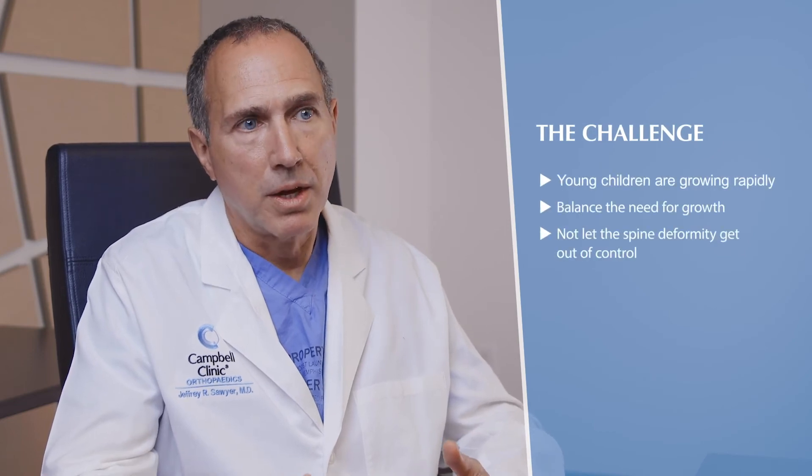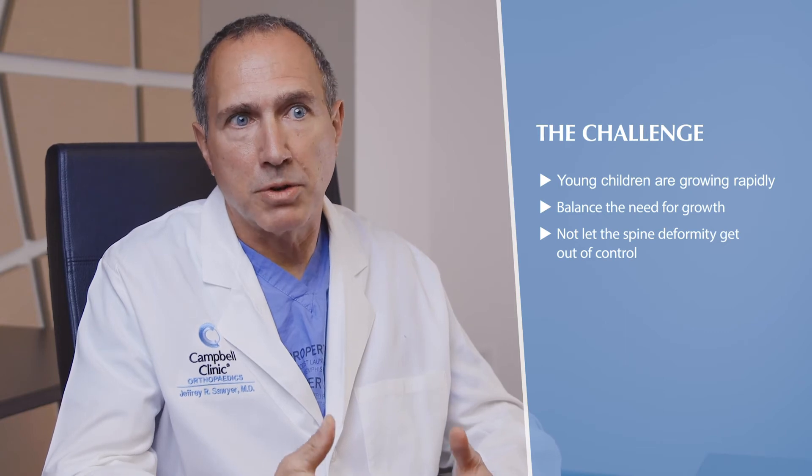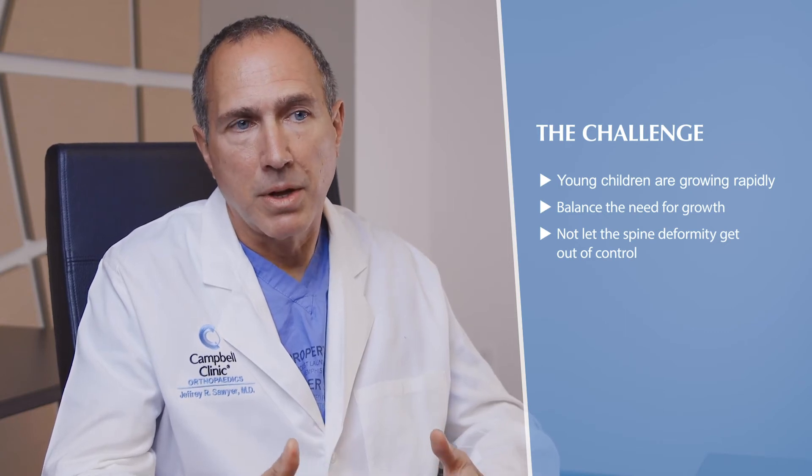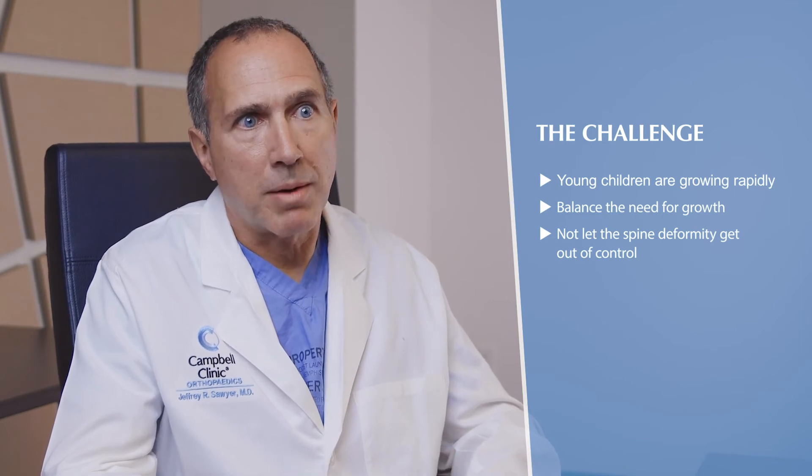More recently our strategy is to delay surgery as long as we can, whether that's with observation, bracing, or casting. That's a much better solution both for kids and families — delay as long as possible but intervene when necessary. The problem with these deformities is they're driven by growth, and a two-year-old has tremendous potential for growth. So we're trying to balance allowing the child to grow and get bigger in terms of their lung size and lung volume, while not letting the spine deformity get out of control.